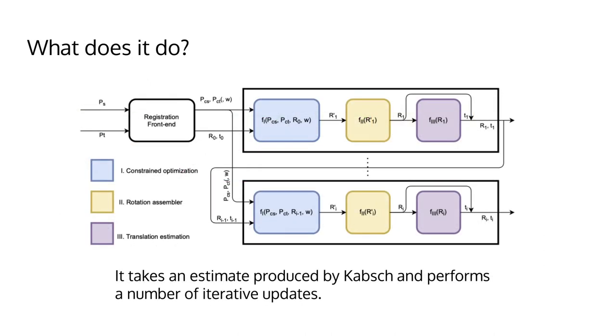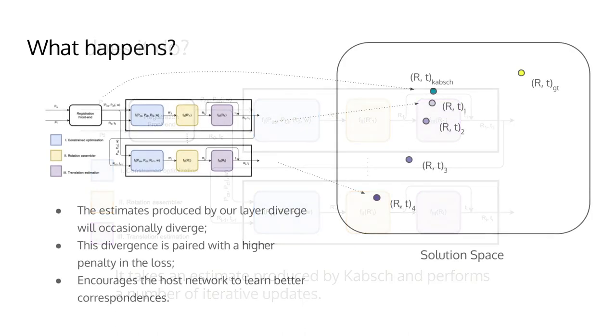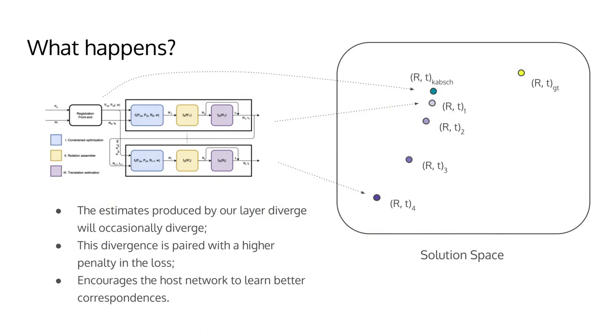So what does our method actually do? By solving a different optimization problem, our method takes an estimate produced by Kabsch and performs a number of recurrent iterative steps to update this estimate. In many cases, our layer will not modify the estimate coming from Kabsch throughout its iterative procedure. However, in certain cases, the estimates produced by our layer will progressively diverge from the original one with each iteration.